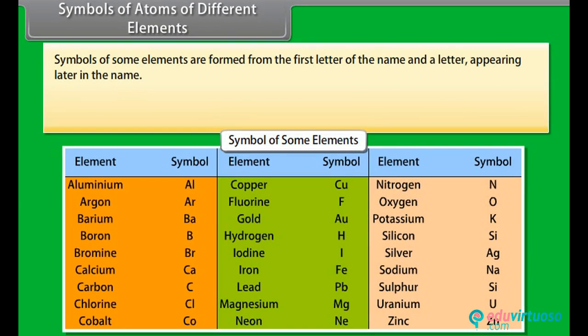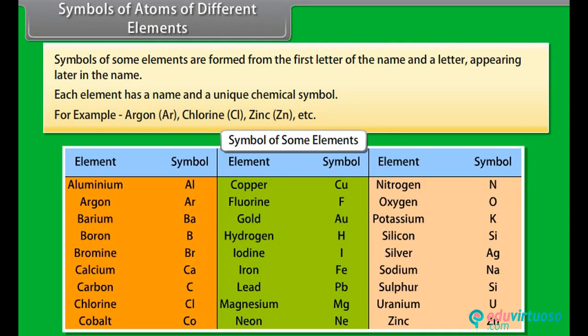Symbols of some elements are formed from the first letter of the name and a letter appearing later in the name. Each element has a name and a unique chemical symbol. For example, Argon is Ar, Chlorine is Cl, Zinc is Zn, etc.